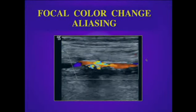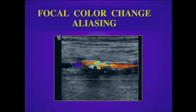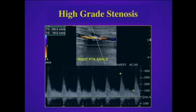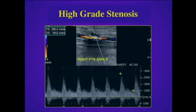Here's an example of aliasing in the posterior tibial artery. Notice calcification within the wall and aliasing artifact at the site of the stenosis — this is where we'll place the sample volume for pulse Doppler sampling. In this example, there is a peak systolic velocity of approximately 350 centimeters per second across that stenosis. Also note that flow is only in one direction through the lesion, and what we see below the baseline is some bruit artifact.